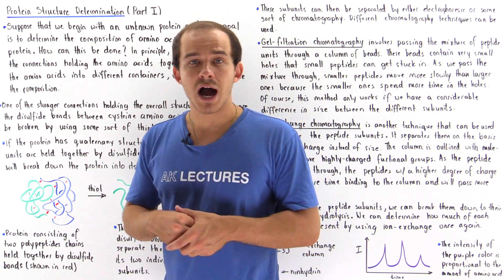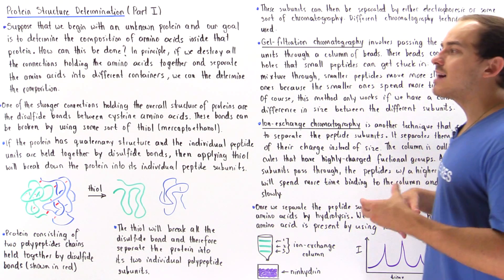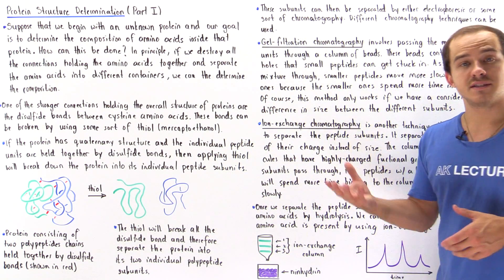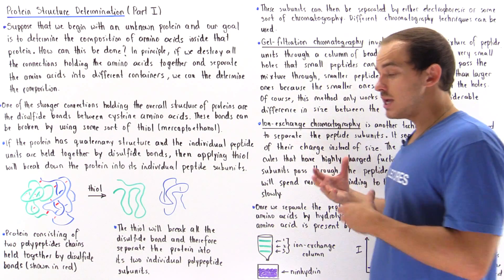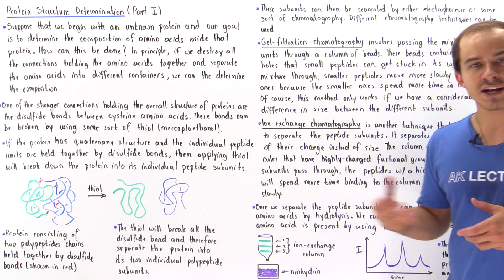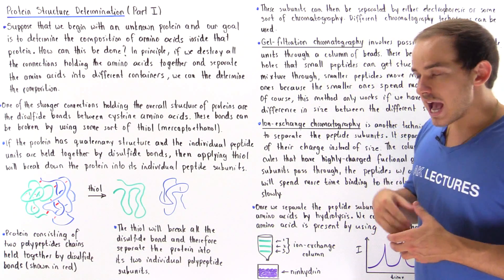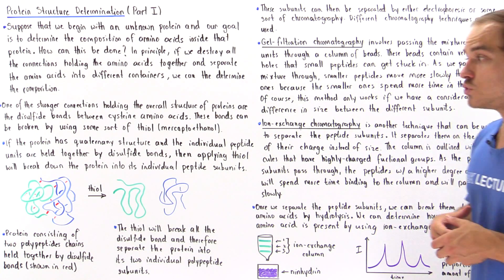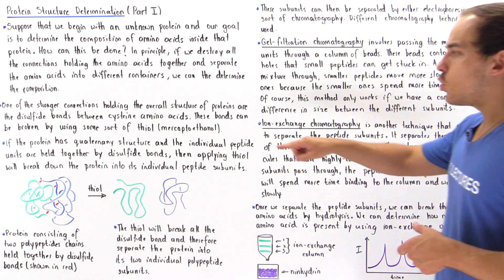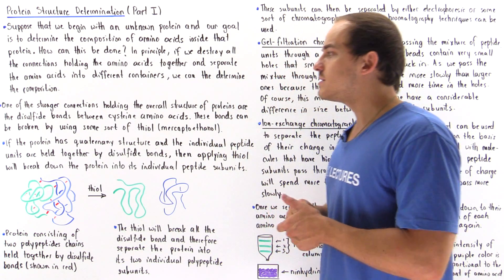These disulfide bonds between our cysteine molecules are, in fact, covalent bonds. The way we form disulfide bonds is via an oxidation reaction, so the way we break them is through the opposite — reduction. If we take our disulfide bond and allow it to undergo a reduction reaction by mixing it with some type of thiol, that cysteine bond will break. The most common thiol used, specifically in biochemistry, is mercaptoethanol, which can be used to cleave our disulfide bridges.